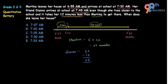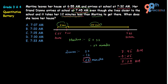Deanne reaches school at 7:45 AM and it takes her 25 minutes. So we subtract 25 minutes from 7:45 AM: 7:45 − 0:25 = 7:20 AM. This tells us that Deanne left her home at 7:20 AM, which corresponds to option B — the correct answer.